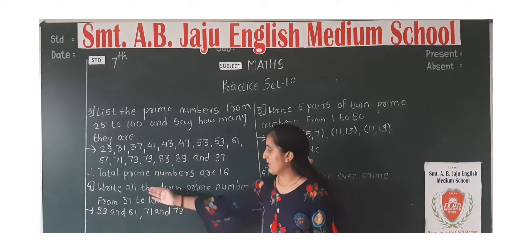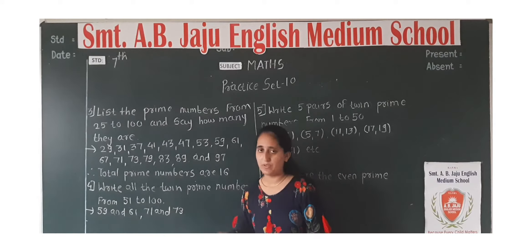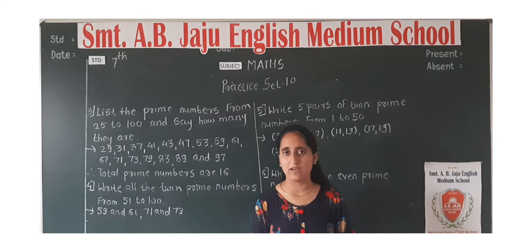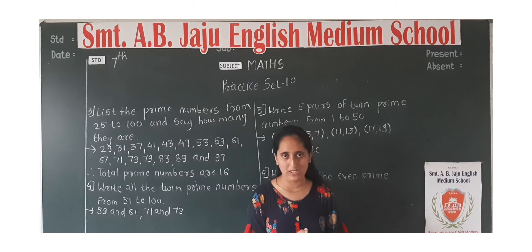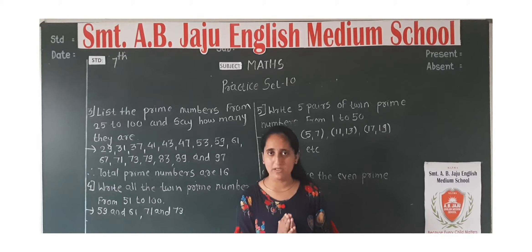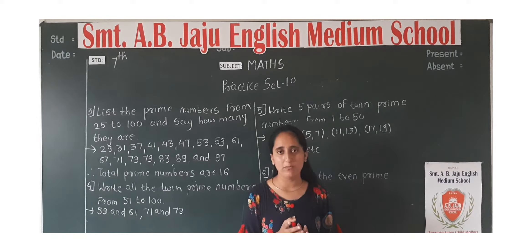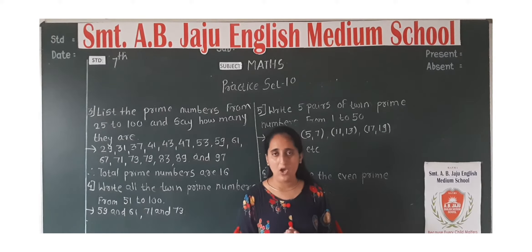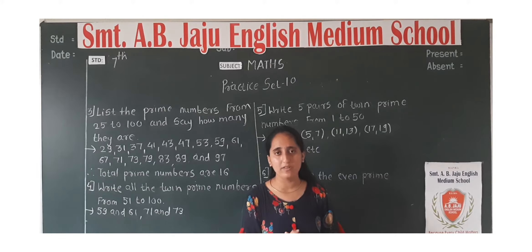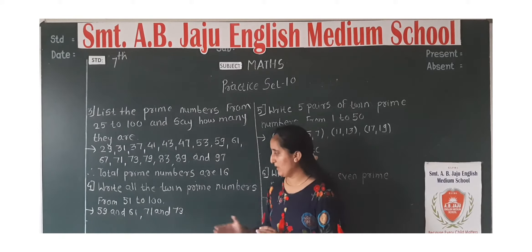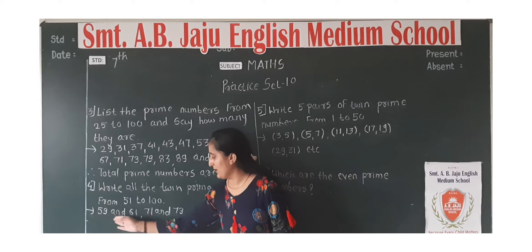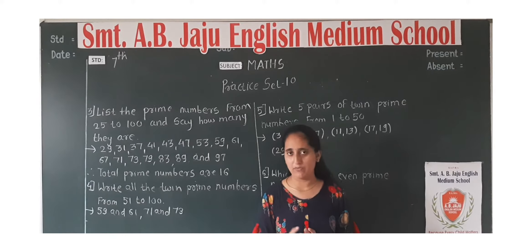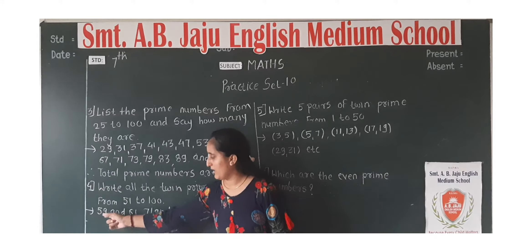Next question: Write all the twin prime numbers from 51 to 100. Now, the twin prime numbers — in the first part we saw the definition. When two prime numbers are paired and the difference between them is 2, and their common factor is only 1, then they are called twin prime numbers. So we need to find twin prime pairs between 51 to 100.